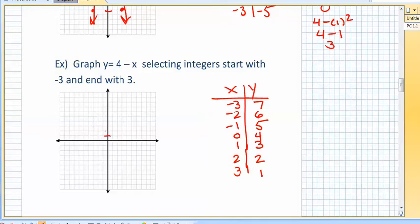So negative three, five, six, seven. And then over three. So then it just keeps going down one every time. And notice it's a straight line, because it's a linear equation. It's just x. It's not x squared.